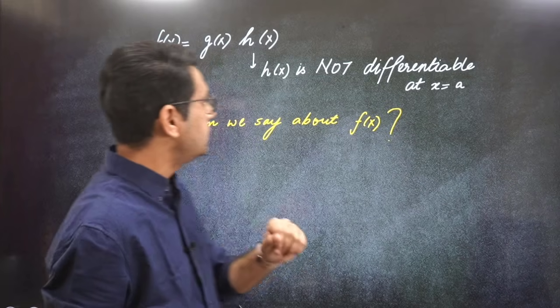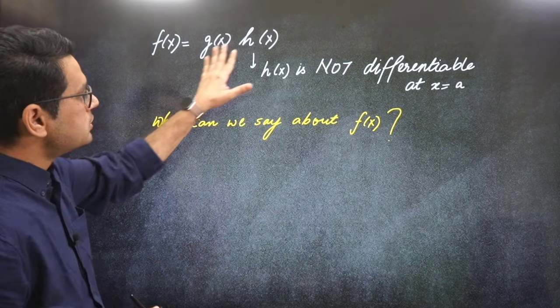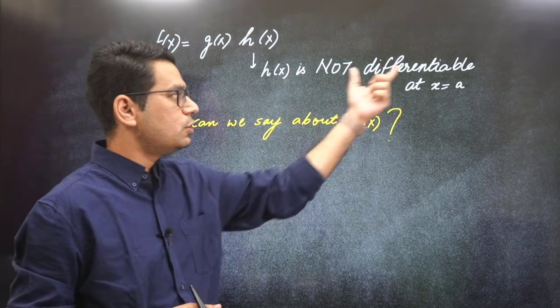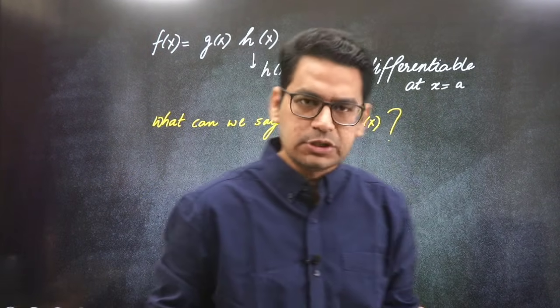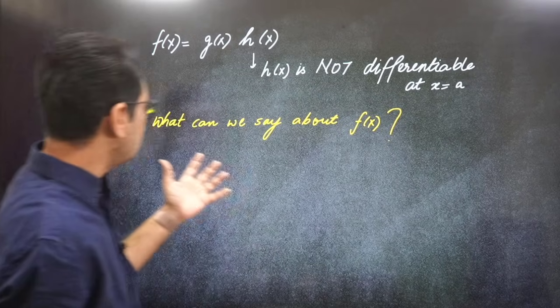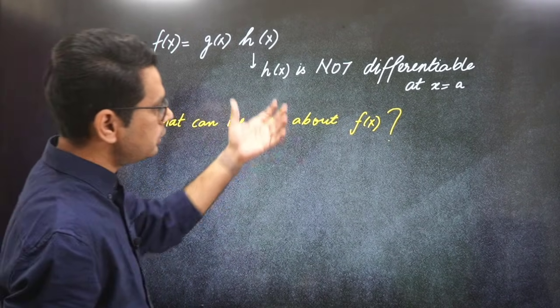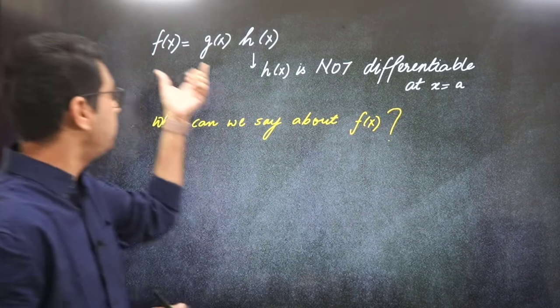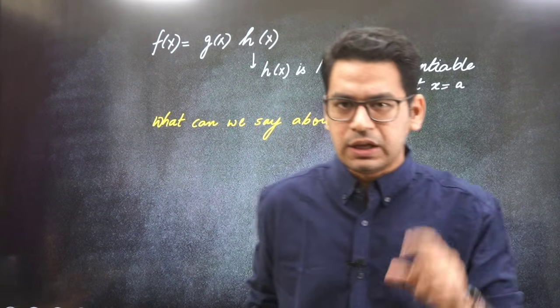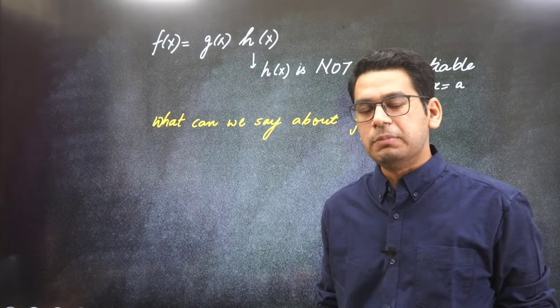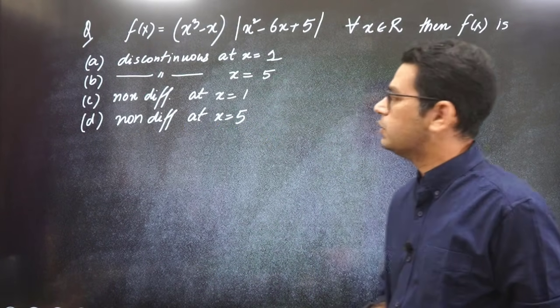So the question here is f(x) equals g(x) times h(x) where h(x) is not differentiable at x equals a. Then the question will ask what can we say about the differentiability of f(x). I will give you a hint about what sort of questions there are and you will immediately be able to connect.